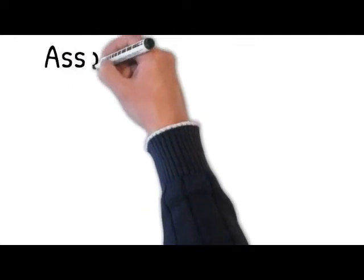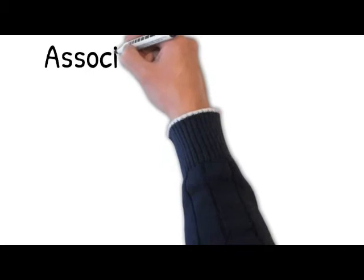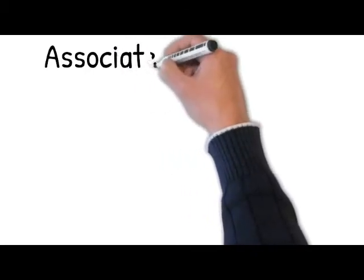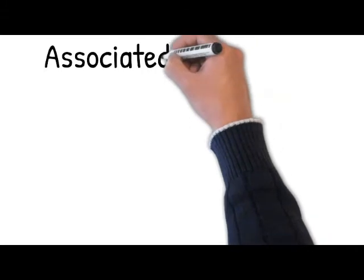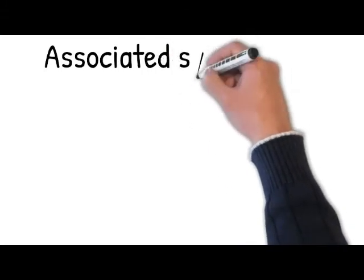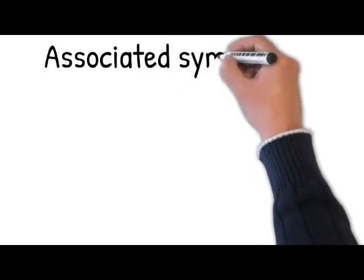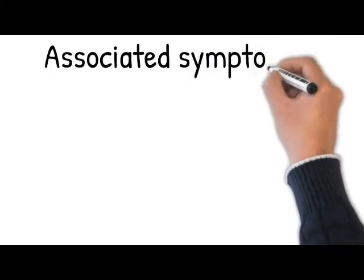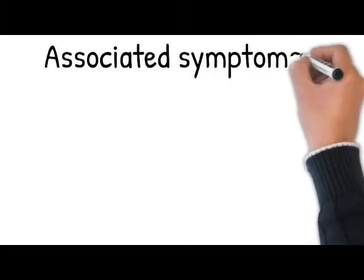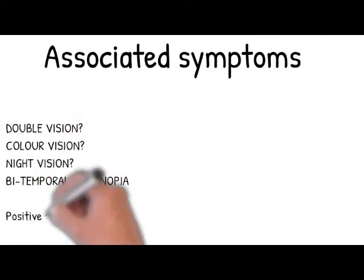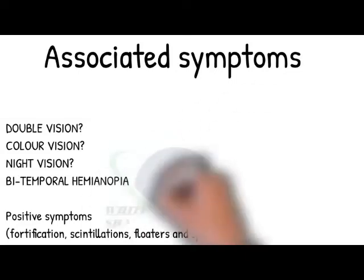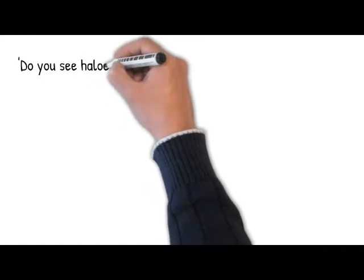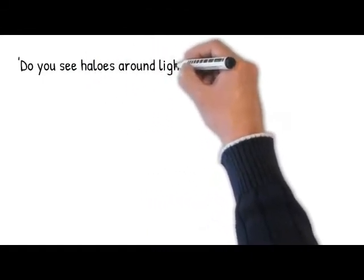Associated symptoms: ask do you see double? Ask about color vision — do you have trouble differentiating colors? Night vision — do you have trouble seeing at night or in the dark? Do you have trouble seeing the sides? Ask about any positive symptoms like fortification, scintillations, floaters, and spectra. Flashing lights and zigzag patterns are associated with migraine, retinal detachment, and occipital lobe lesions. Do you see halos around lights? Halos typically occur with acute glaucoma.